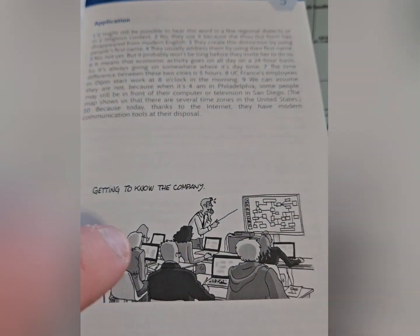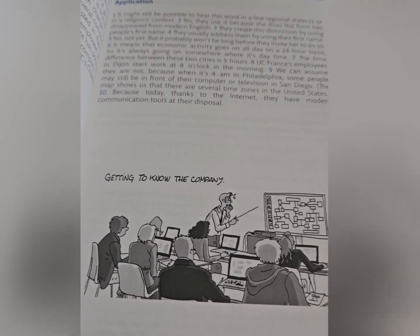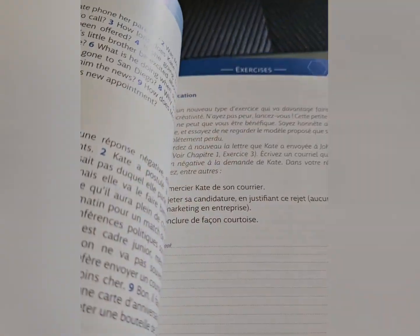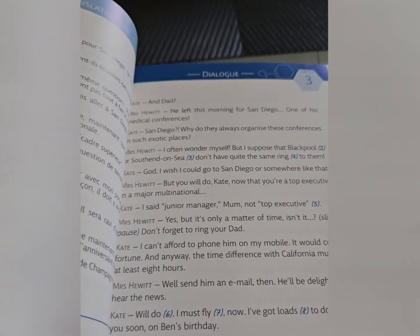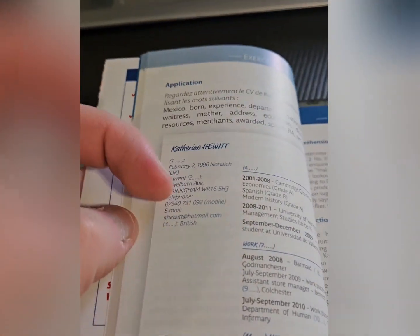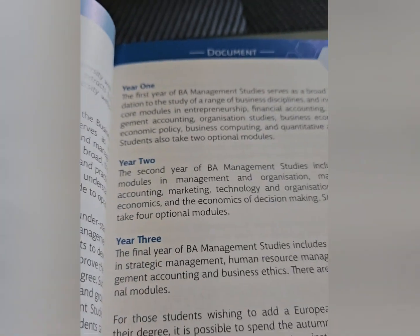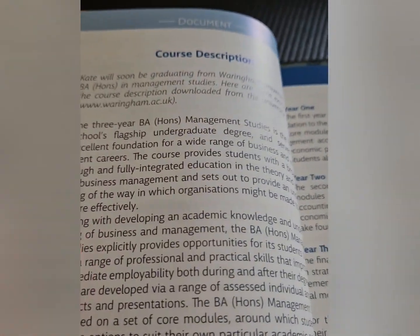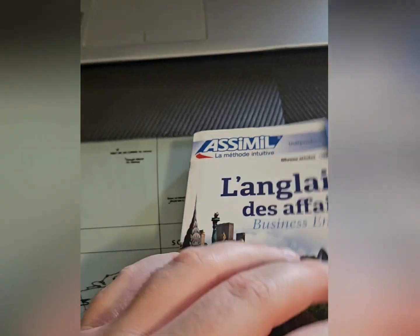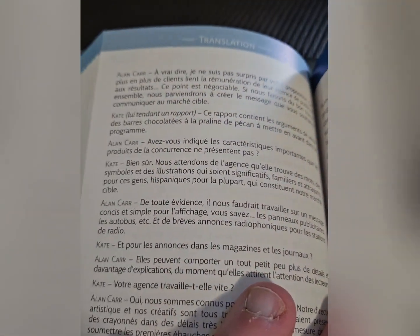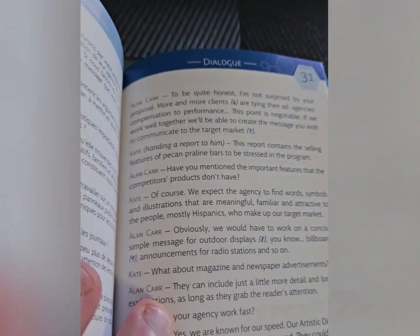And you still have the little drawings here. Getting to know the company, which is really important — before you go on an interview, you should really know what the company is about, what their goals are, and all that kind of stuff. And there's a course description here, so it's not that much, but yeah, you do progress every lesson. Collection Business — I like that. If you take another lesson, there's a translation section, and here you have the dialogue.